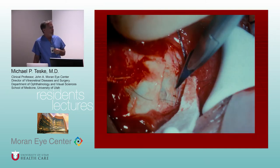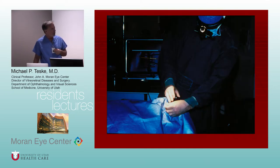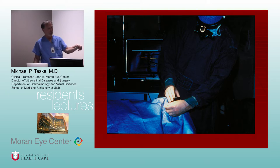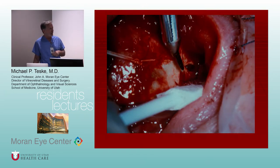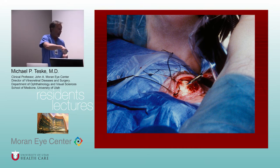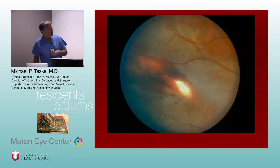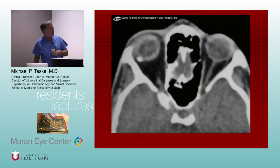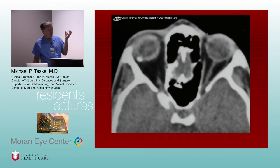External magnetic extraction: there was an old external magnet called the Bronson magnet. You could externally remove a foreign body through the sclera — especially a deep one — by making a little cutdown to the sclera and using this external magnet to pull it out. This just shows the little cavity in the sclera where it was removed. Some foreign bodies are intrascleral, with just the tip visible in the retina, so some may be easier to remove externally than internally.